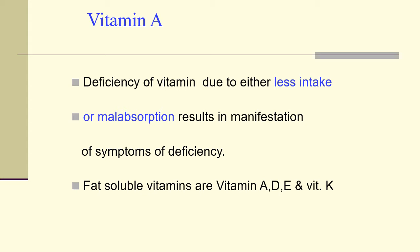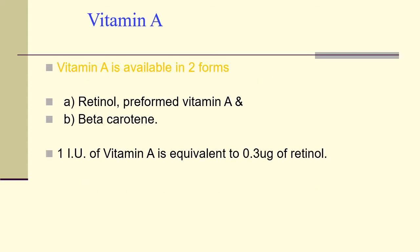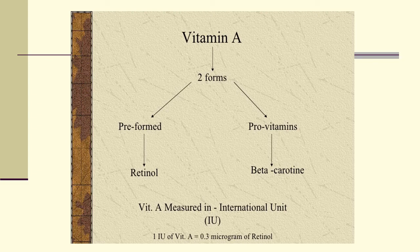Fat-soluble vitamins, as you know, are vitamins A, D, E, and K. Vitamin A is available in two forms: retinol, called preformed vitamin A, and beta-carotene. One international unit of vitamin A is equivalent to 0.3 microgram of retinol. This chart shows vitamin A in two forms — vitamin A measured in international units, where one IU equals 0.3 microgram of retinol.